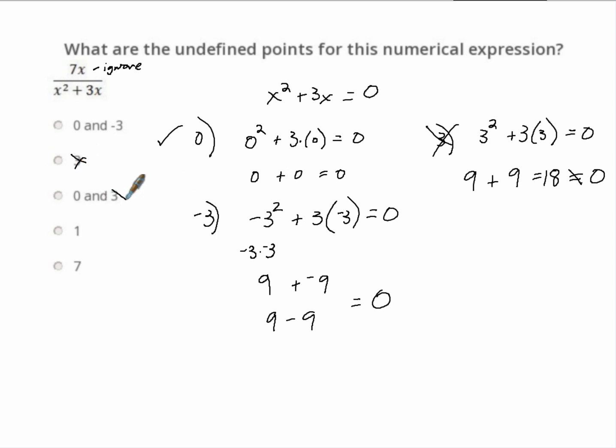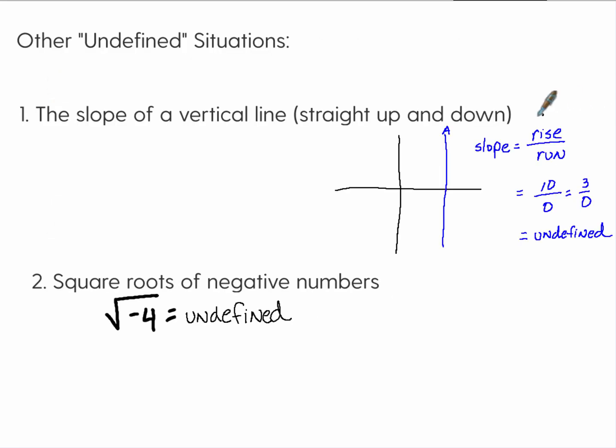So that one's wrong and that one has to be wrong. 1 won't work either and 7 won't work. So this is our answer. This is how we make this fraction undefined. So this fraction is undefined when x equals 0 or x equals negative 3. So that's what they mean by undefined. We need the bottom of that fraction to be equal to 0.